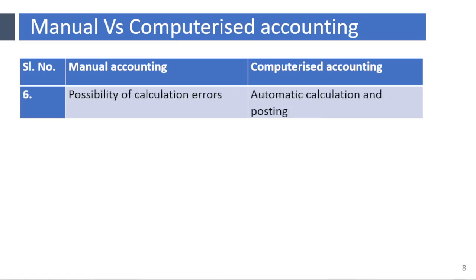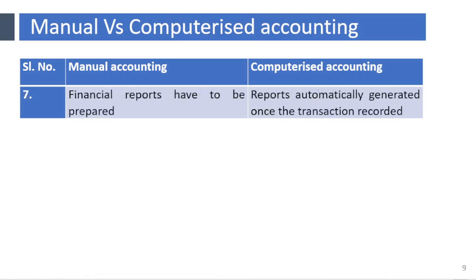There is a possibility of calculation errors in manual accounting, whereas automatic calculation and posting is done electronically in computerized accounting. Financial reports have to be prepared once the trial balance is ready in manual accounting, whereas reports are automatically generated once the transactions are recorded in computerized accounting.